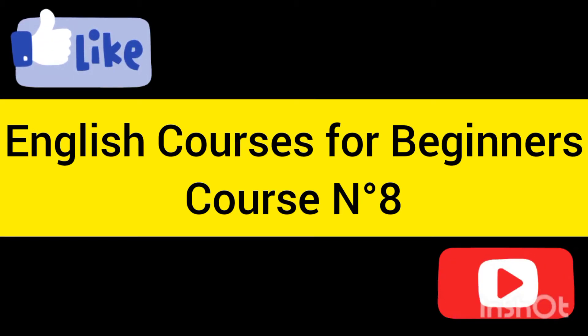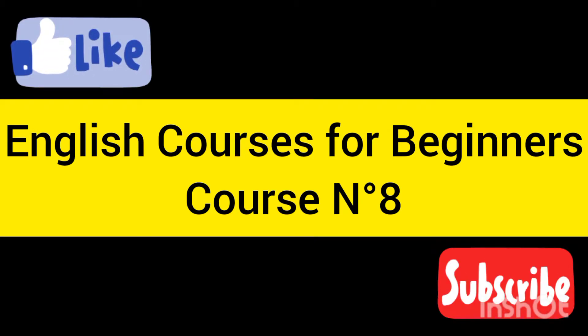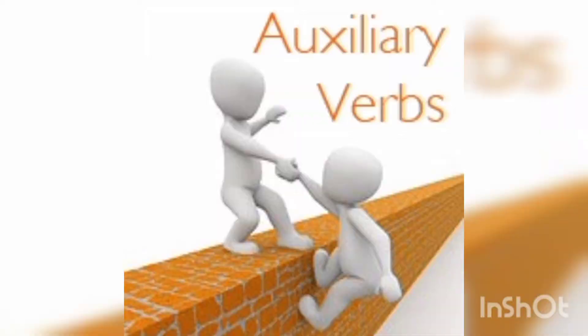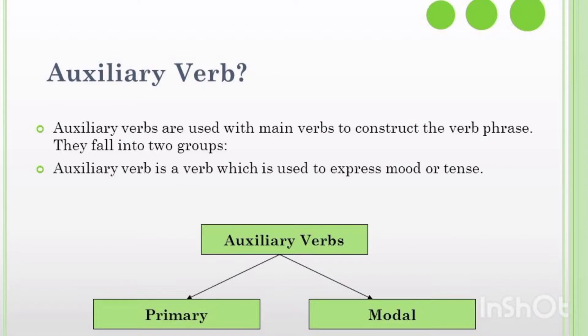English courses for beginners, course number 8: Auxiliary verbs. الأفعال المساعدة — Auxiliary verbs are used with main verbs to construct the verb phrase. They fall into two groups. An auxiliary verb is a verb which is used to express mood or tense.